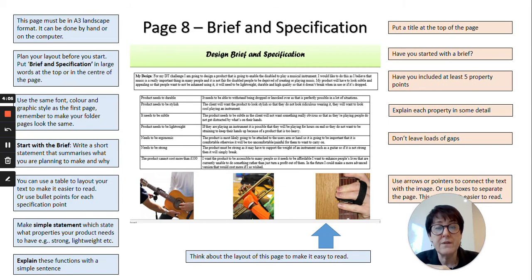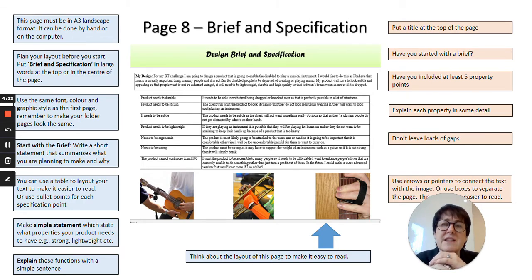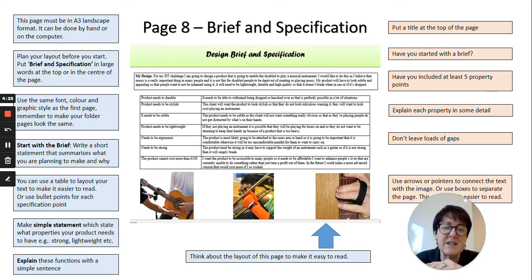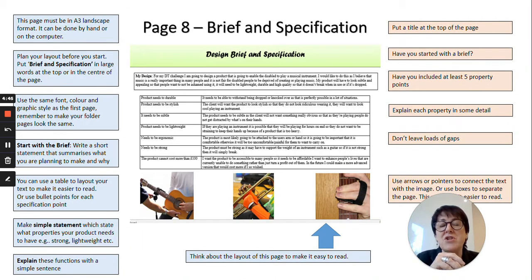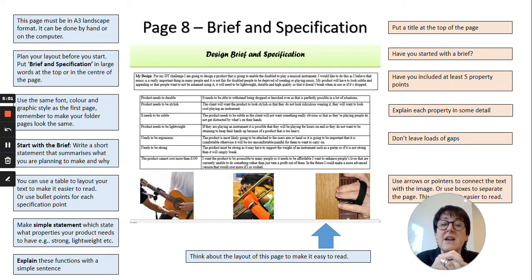On the right-hand side he's then got a list of statements that back up each of those functions — a couple of sentences explaining each one in a bit more detail. So if he said he's going to look at ergonomics, he needs to explain why. He's also said his product needs to cost less than a hundred pounds, and in his statements he's explained why that's an important attribute for this particular product. At the very bottom he's included some photographs, though photographs aren't necessarily required — what's more important is that you fully communicate your brief and specification. Don't leave large gaps; if there doesn't seem to be enough writing, put more on.